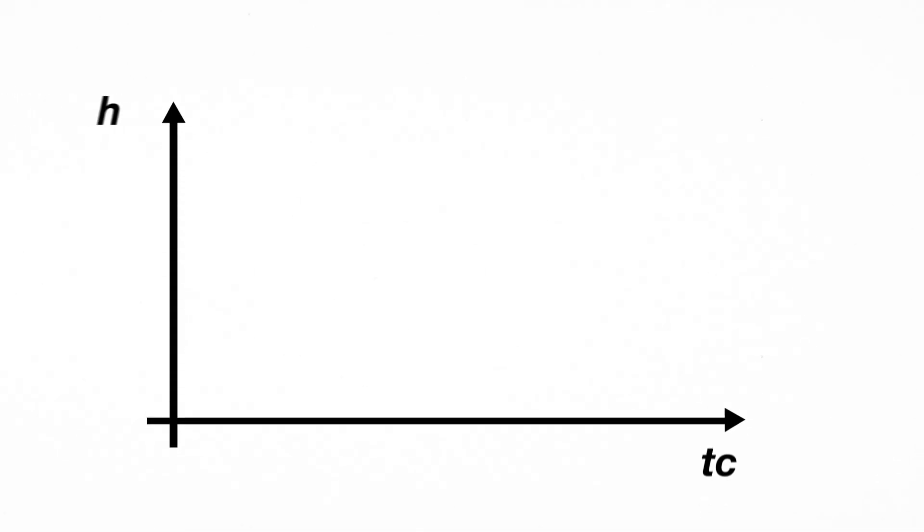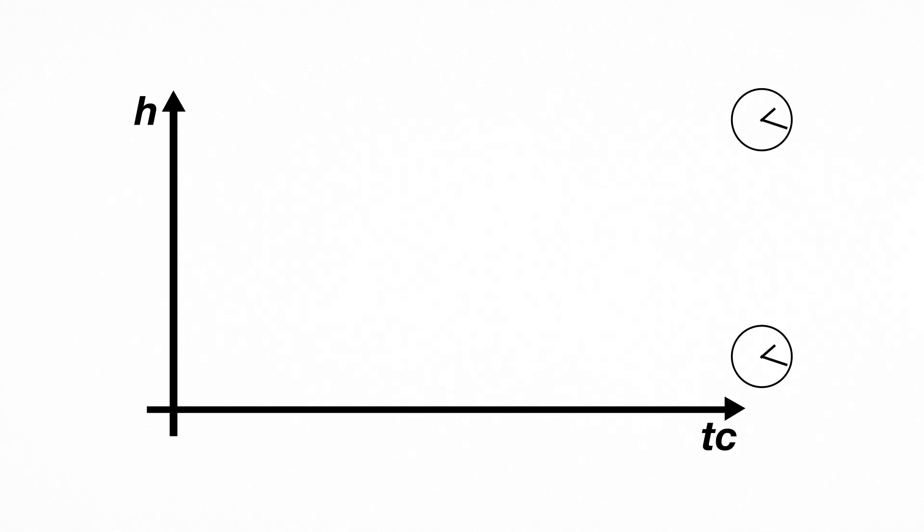Let's use a graph to portray a particle hovering at a certain height. On the vertical axis, we have height and on the horizontal axis, we have time multiplied by the speed of light to have units of length. So at a certain height, time passes, but the height stays the same.